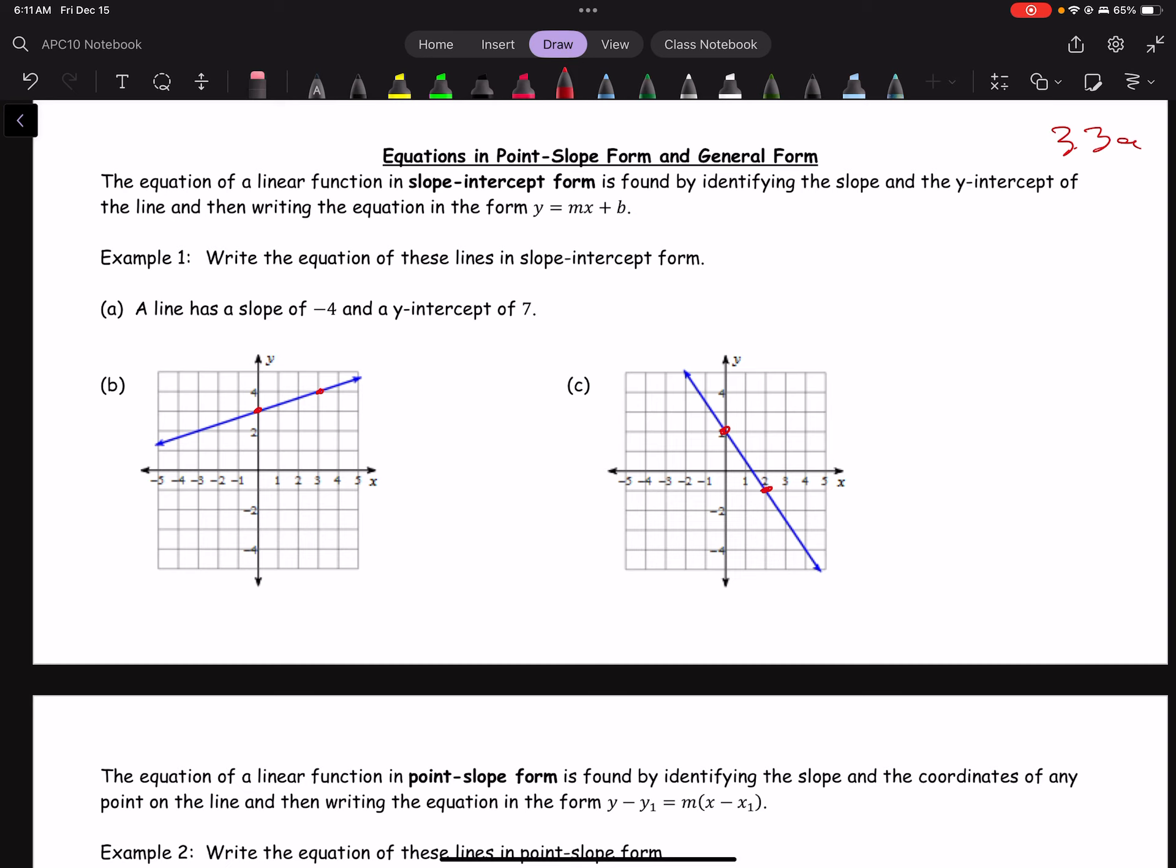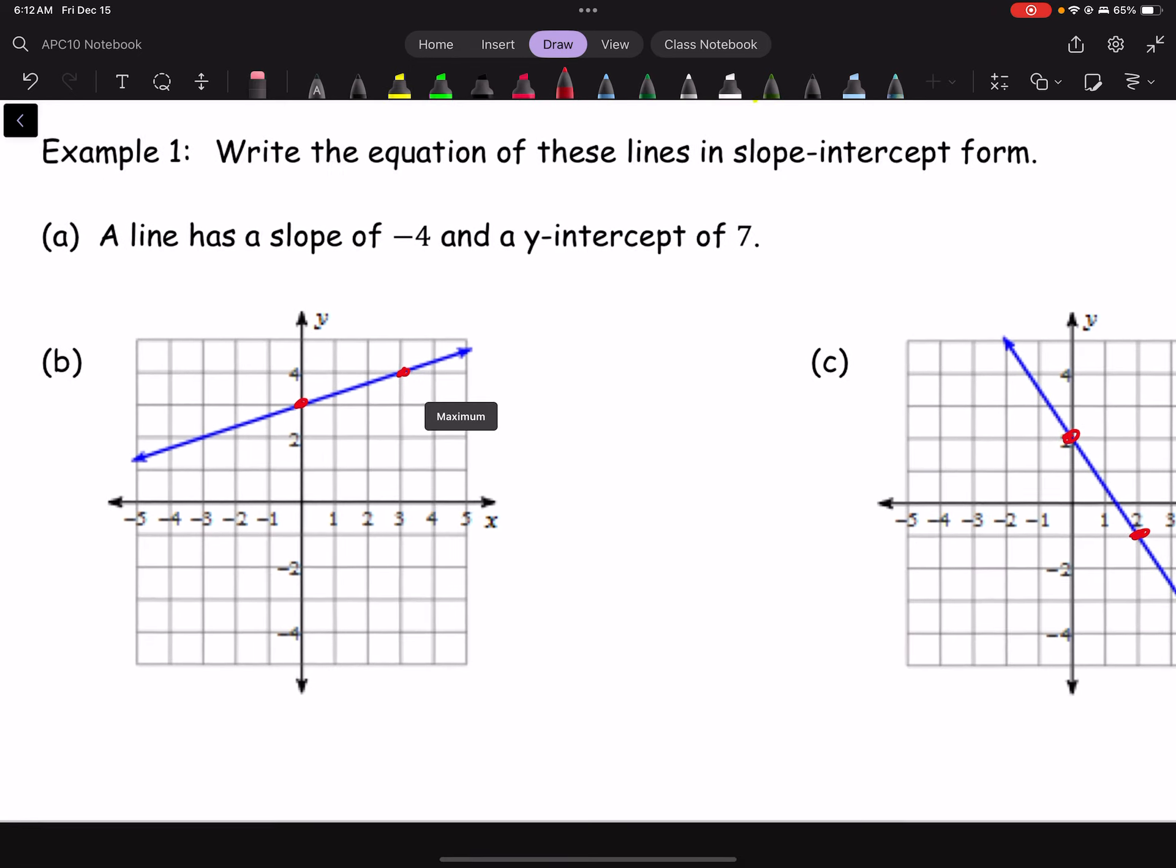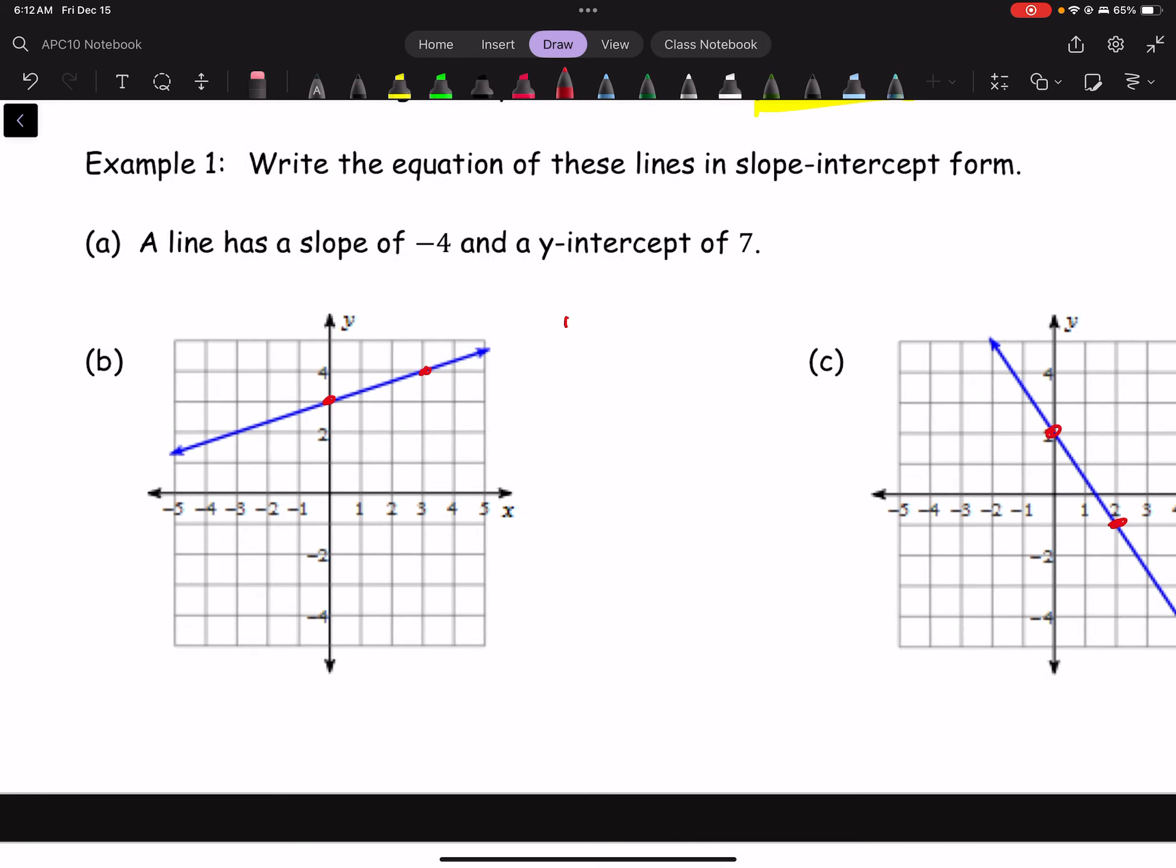The equation of a linear function in slope-intercept form can be found by identifying the slope and the y-intercept of a line and then writing it in the very familiar equation y equals mx plus b. So we're going to write these equations in slope-intercept form, and since I know I'm going to write them in slope-intercept form, I'm just going to write y equals mx plus b.